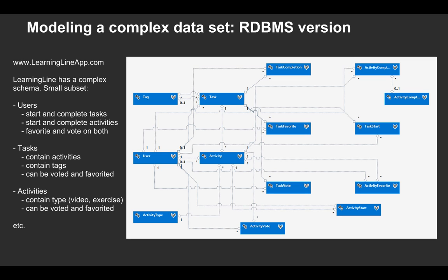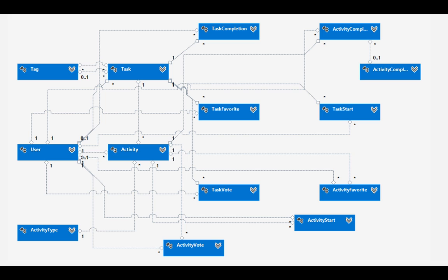If we take LearningLine and focus on a simplified version of the task, we come up with a fairly ugly-looking schema. Here's the Entity Framework Designer version. You can see tasks, tasks have activities, activities have types, they have votes, tasks have votes, you can start an activity, there are tags — all sorts of stuff. And a lot of pieces are missing, so the real story is actually more complicated. There are 15 tables with 19 relationships between them just to display the task page — that is super complicated, hard to change, and hard to scale.